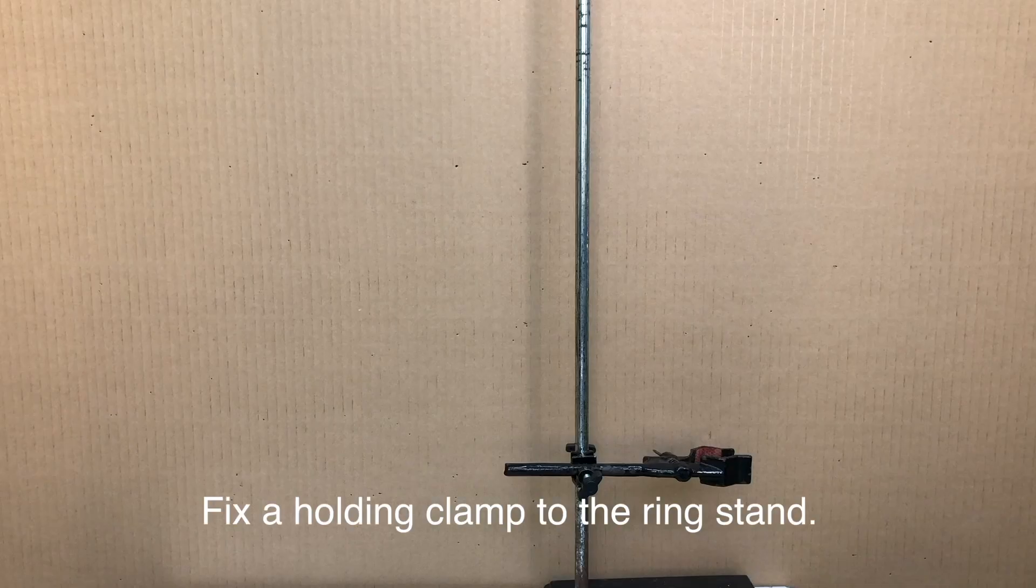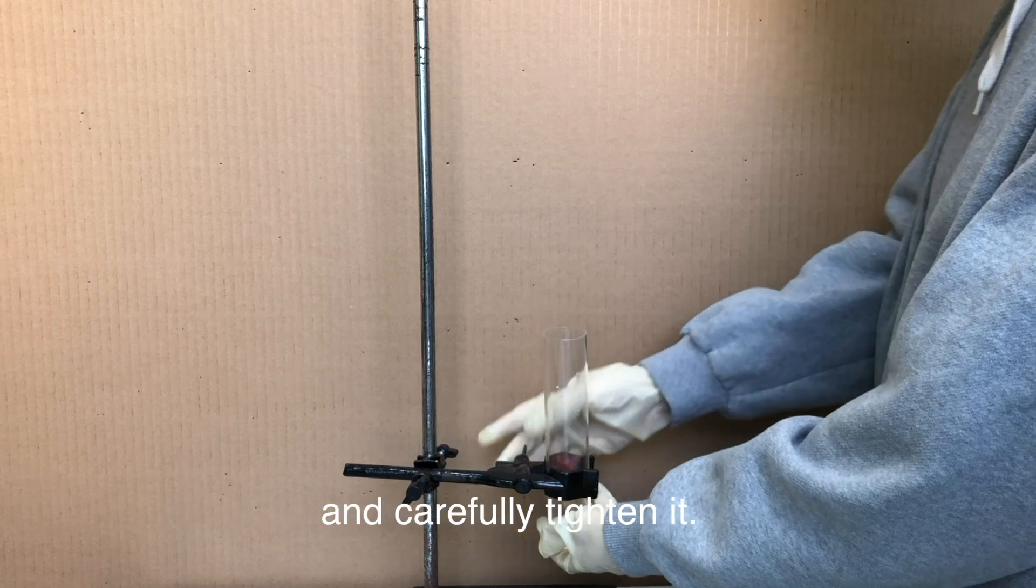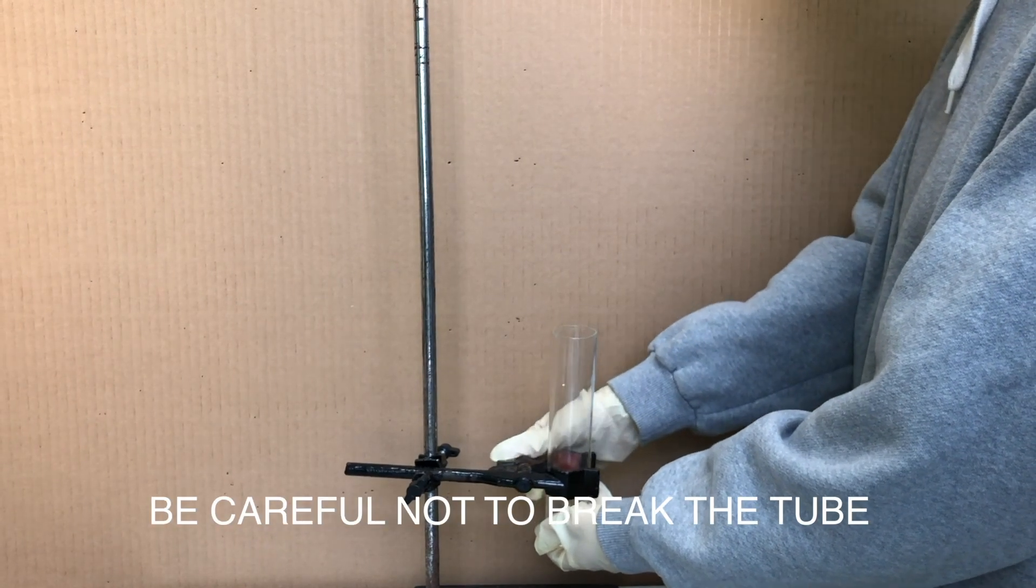Part two: experimental setup. Fix a holding clamp to the ring stand. Place the glass tube chamber in the clamp and carefully tighten it. Be careful not to break the tube.